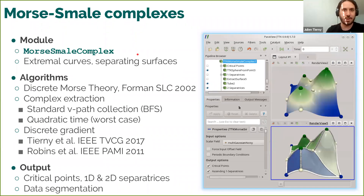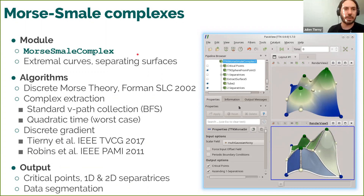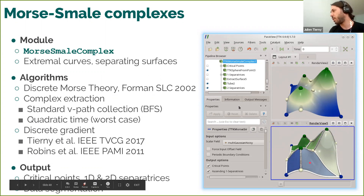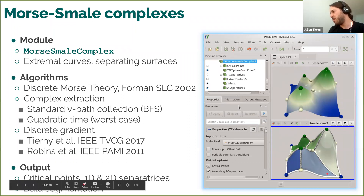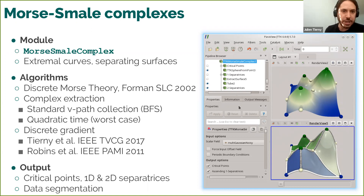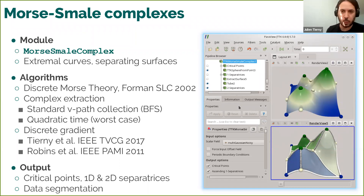An important feature in TTK is the Morse-Smale complex — a cell complex representation of data such that any two points in the domain that integrate forward and backward to the same extremities end up in the same cell. Like most modern implementations, TTK's implementation is based on discrete Morse theory, which brings robustness and ease of implementation. There are a number of things that are difficult to handle in the PL setting that magically vanish in discrete Morse theory, which is really nice when implementing it.